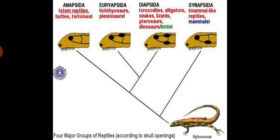You have already studied about the classification of class Reptilia, wherein we came across orders like Anapsida, Synapsida, Euryapsida, Parapsida, and Diapsida. This slide shows the different types of those reptiles with reference to these temporal fossa.